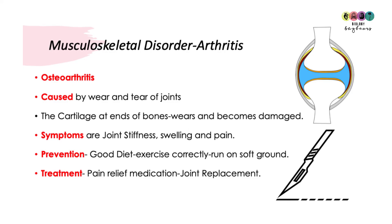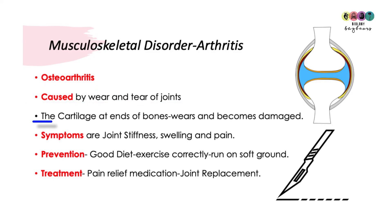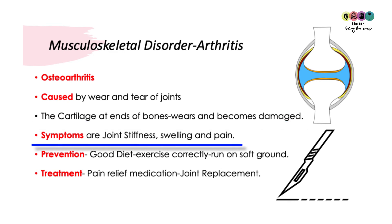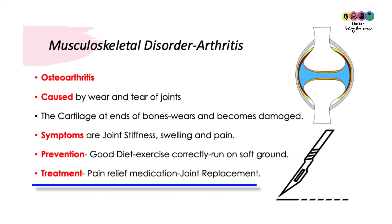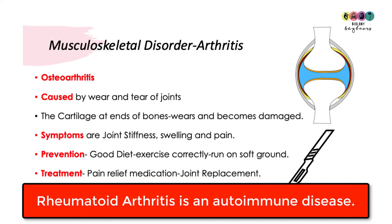We have to give a musculoskeletal disorder, and the one we discuss is osteoarthritis. It's caused by wear and tear of the joints — the cartilage at the ends of the bones wears away and becomes damaged. The symptoms are joint stiffness, swelling, and pain. Prevention: sometimes there's no way to prevent it, but a good diet and exercising correctly, for example running on soft ground, helps protect your cartilage. Treatment is pain relief and anti-inflammatory medication, but eventually if it gets too bad, a joint replacement is the only solution.